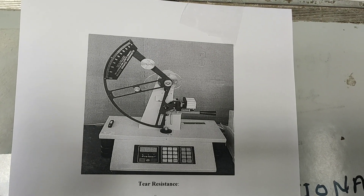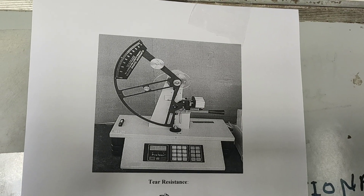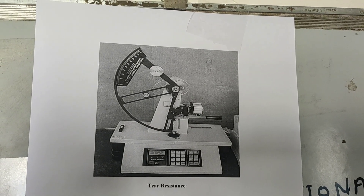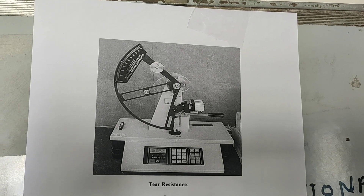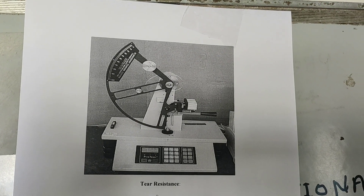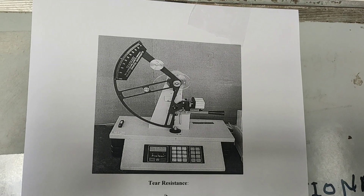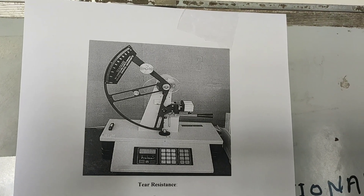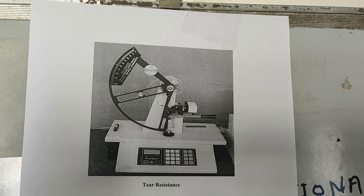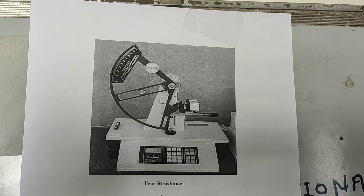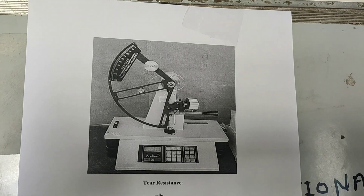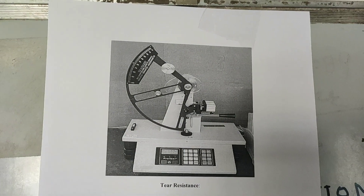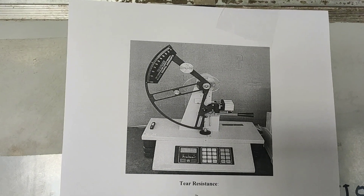The second is edge tearing, where the energy required to initiate a tear is measured. The test is done in both directions of the paper. The work done in tearing is measured by the loss in potential energy of the instrument's pendulum. The tear factor equals tear resistance in grams divided by basic weight in GSM.